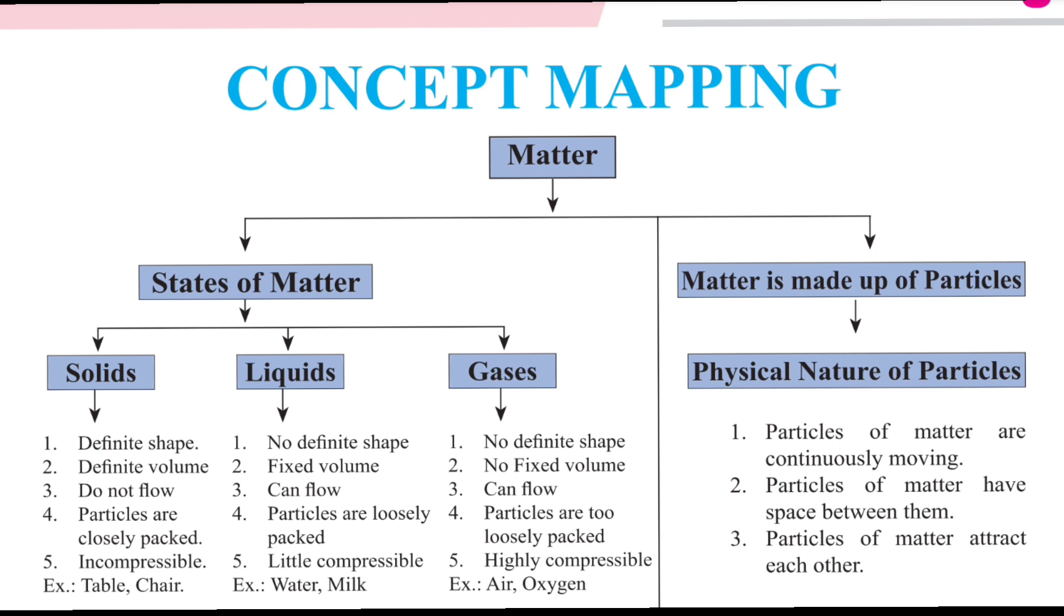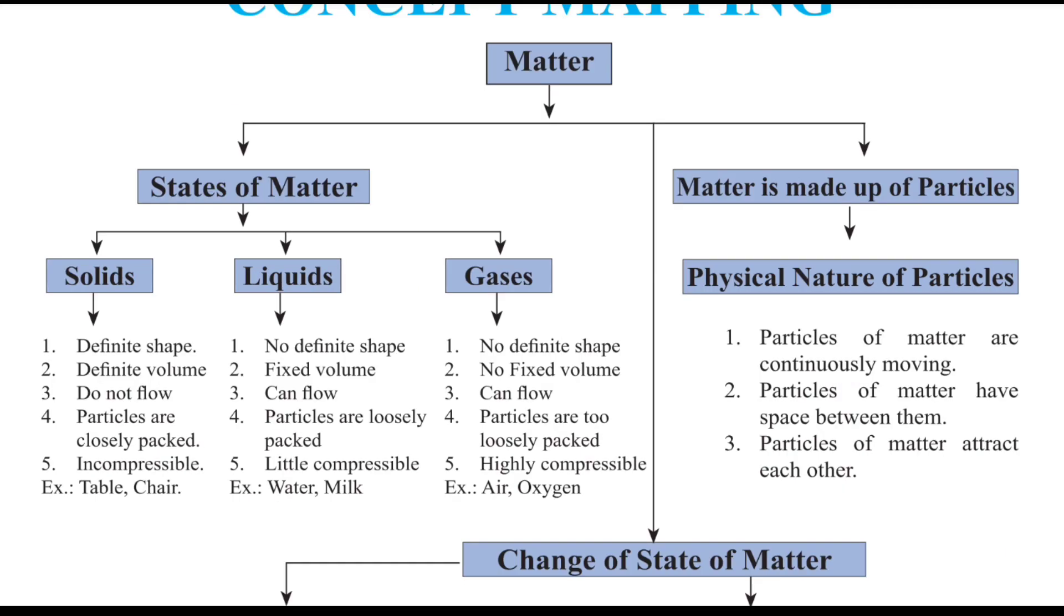Now, move to state of matter. State of matter, we can divide it into three parts: solids, liquids, gases. All these three matters have their different attributes. If we talk about solid, solid has a fixed shape, a definite shape, then it has definite volume, then it does not flow and the particles of solid are closely packed, then it is incompressible. It does not flow here and there. It does not have much space to move here and there. The particles of solids are compressible. They are too close and too engaged with each other. So that's why they do not have flow in them.